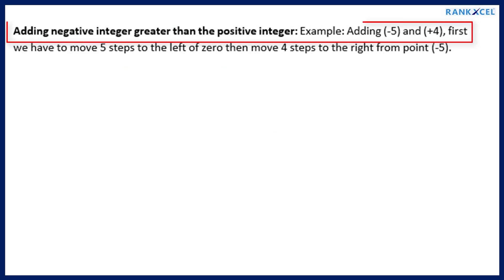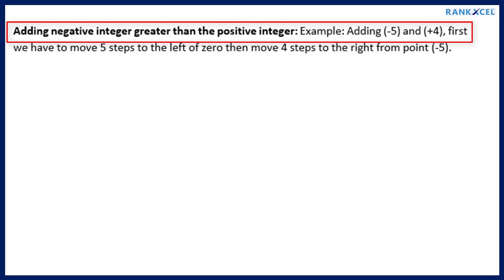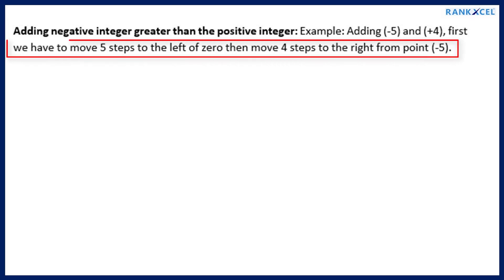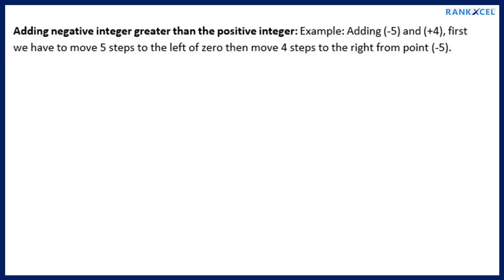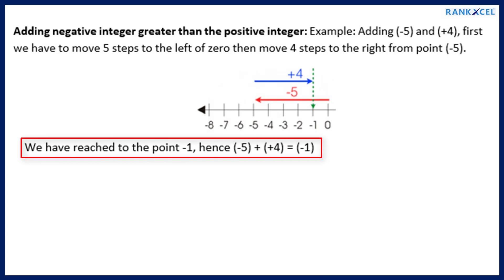Adding a negative integer greater than the positive integer. Example: Adding minus 5 and plus 4. First we move 5 steps to the left of 0, then move 4 steps to the right from minus 5. We have reached the point minus 1. Hence minus 5 plus plus 4 equals minus 1.